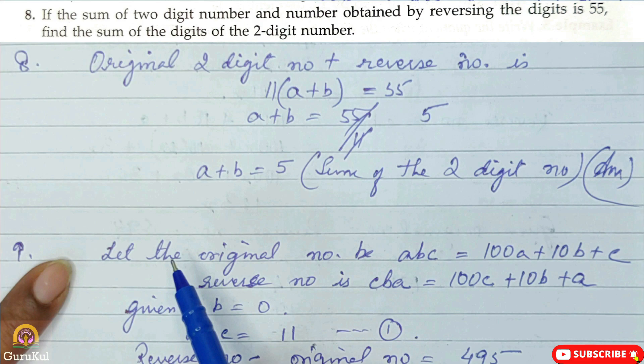The property gives us 11(A plus B) = 55. Evaluating: A plus B is equal to 55 divided by 11, which gives us A plus B = 5. So this is the sum of the digits of the two-digit number, and this is the answer.